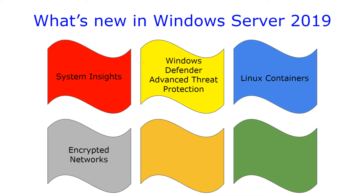Encrypted networks allows encryption of virtual traffic between virtual machines. This is a really huge feature — it allows us to create entirely isolated environments where even the transmission and traffic between servers in that isolated environment is encrypted. There are also network performance improvements for virtual workloads, which now maximizes network throughput to virtual machines without requiring you to constantly tweak your host to get the best performance.